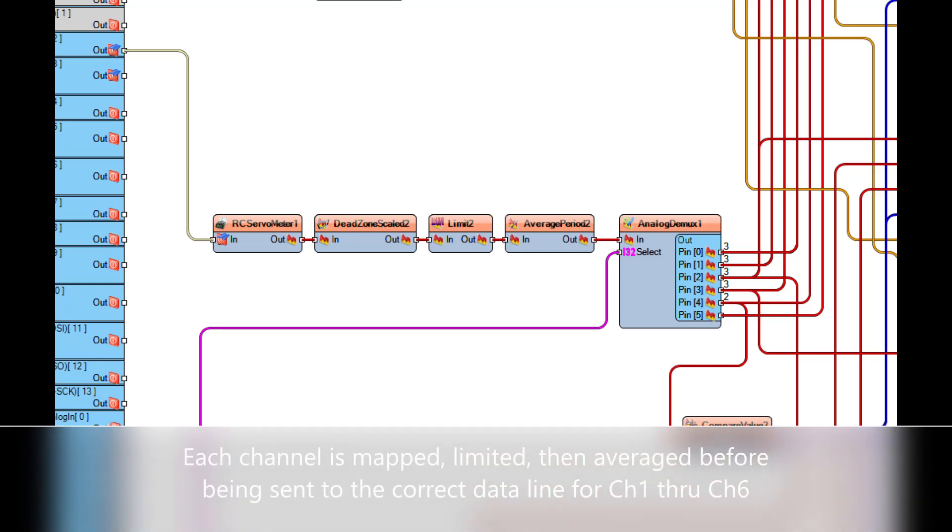Alright so now the RC servo meter goes through the dead zone mapping to give it a little bit of center point. It limits it and then it averages it to catch at least two of the signals for each channel. And then it uses the counter for the MUX chip to actually send it out to the correct channel one through channel six signal line.